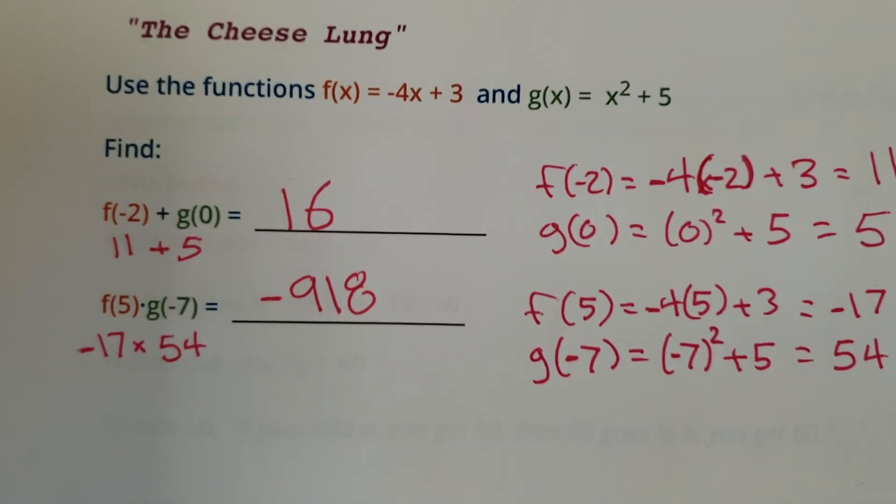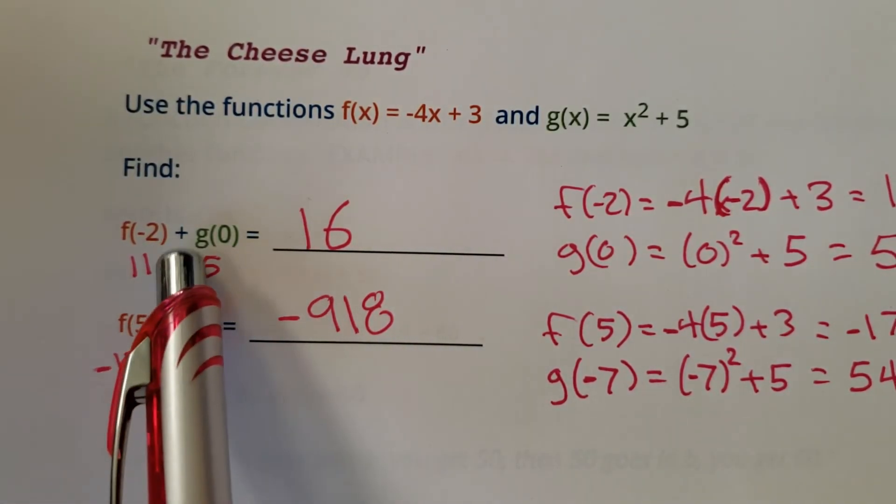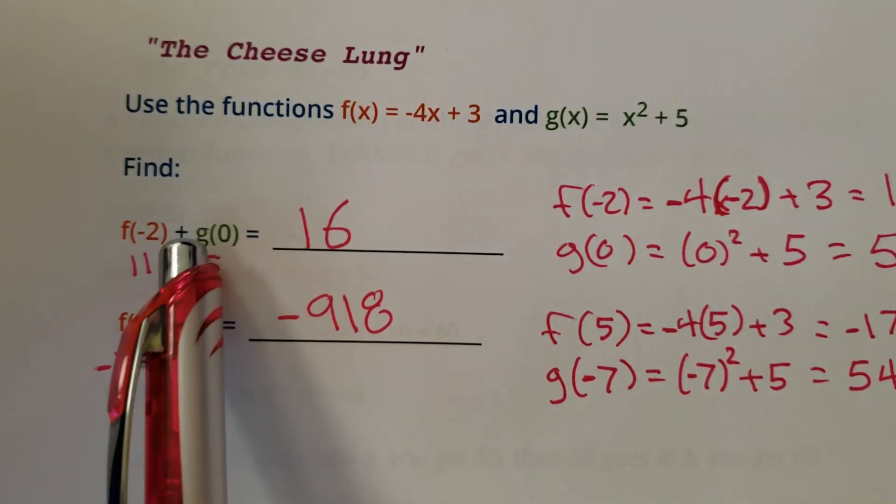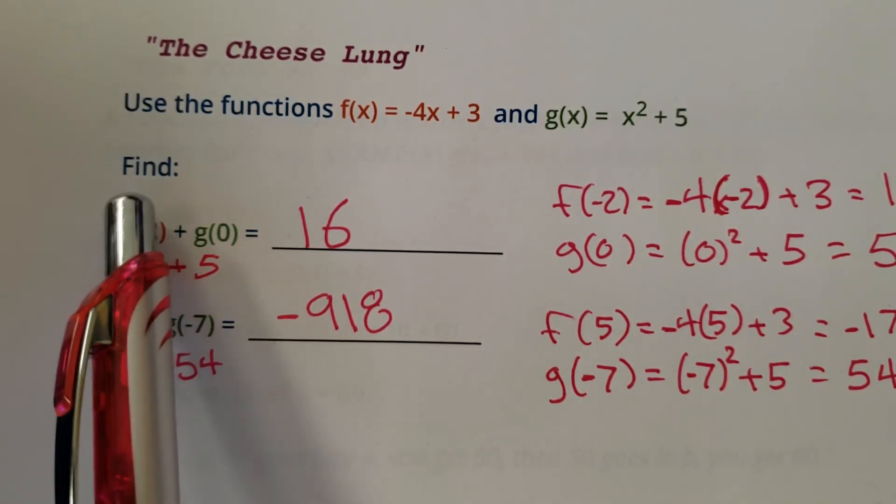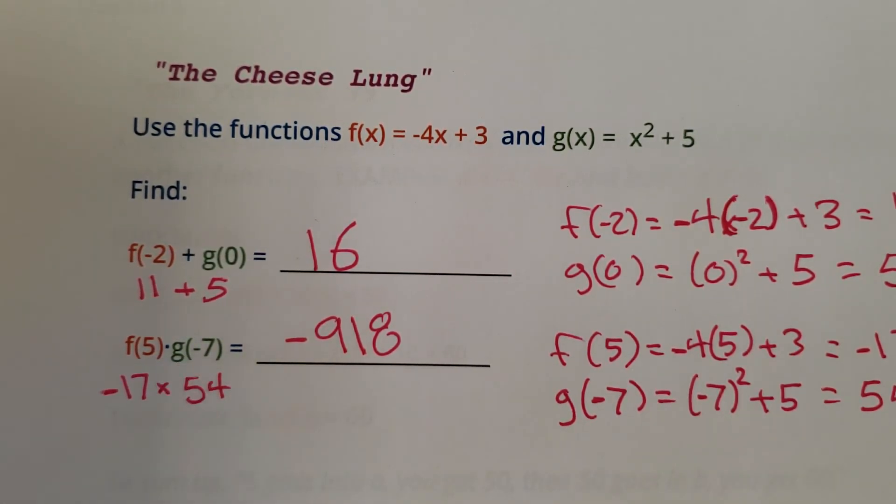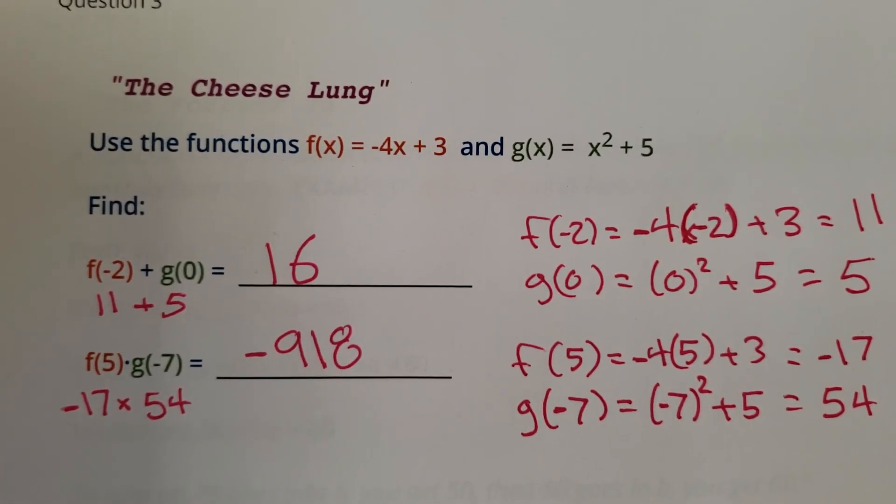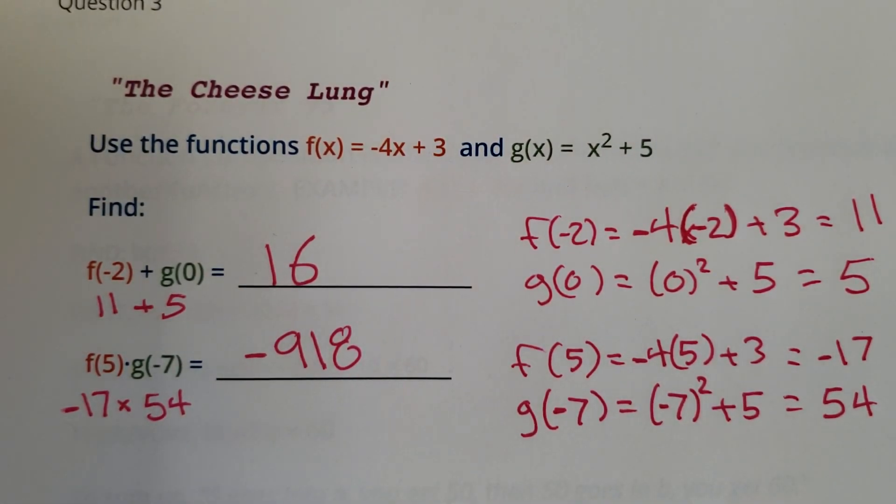All right. We got them. Those are functions. Just do some math with functions. This isn't called a composite function, it's just math with functions. Hey, look at this function, add it to that function. Hey, look at this function, multiply it times that function. So function combinations, combination functions, something like that. Anyway, that was the cheese lung.